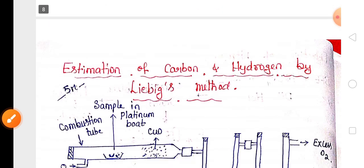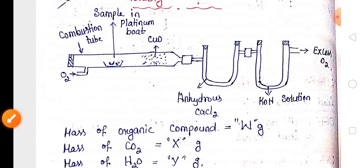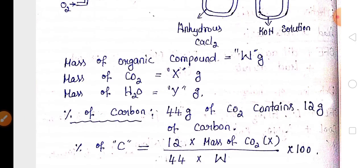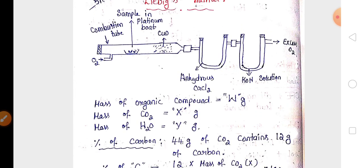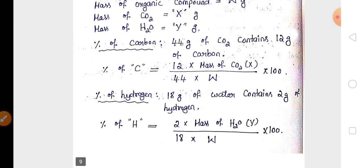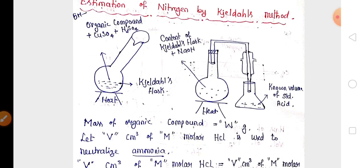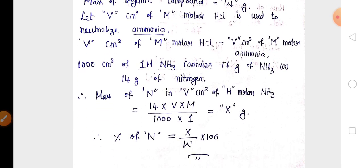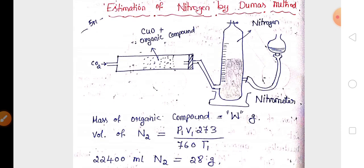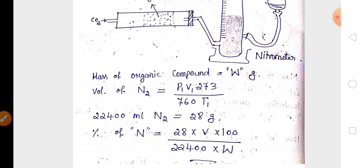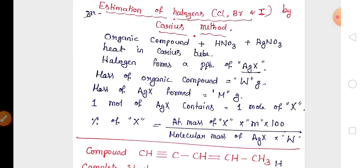One five-mark question is estimation of carbon and hydrogen by Liebig's method — a diagram along with calculation is very important. You need to practice this as it is almost a full-page answer. Another five-mark question is estimation of nitrogen by Kjeldahl's method with diagram and calculation. Dumas' method for nitrogen estimation is also important with diagram and calculations.